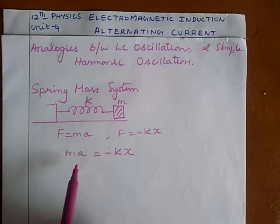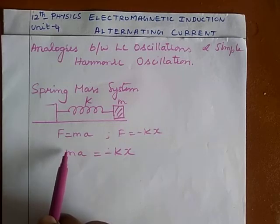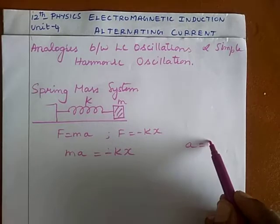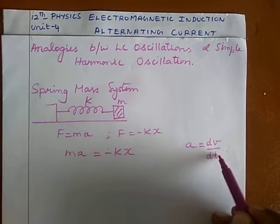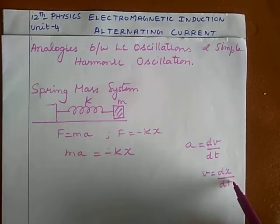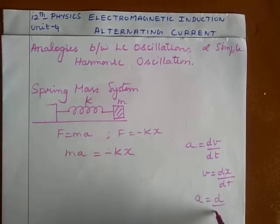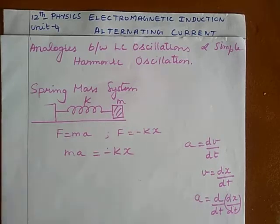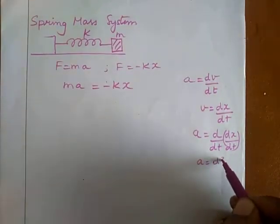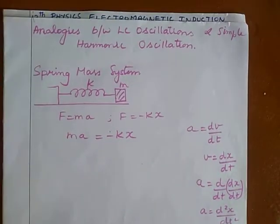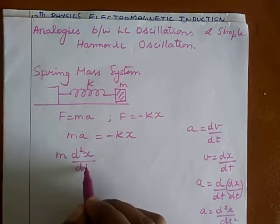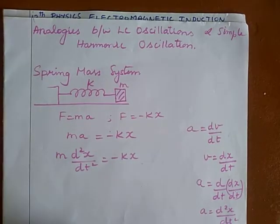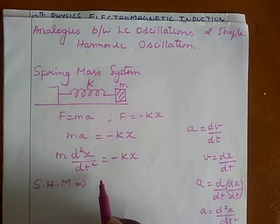Here A is acceleration. To write this equation in terms of displacement, we note that acceleration is the first-order derivative of velocity, and velocity is the first-order derivative of displacement. So acceleration A = d/dt(dx/dt) = d²x/dt². Therefore d²x/dt² = −Kx/M. The equation for simple harmonic motion is d²x/dt² = −ω²x.